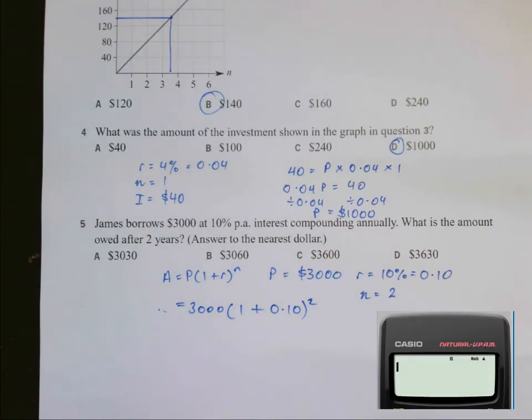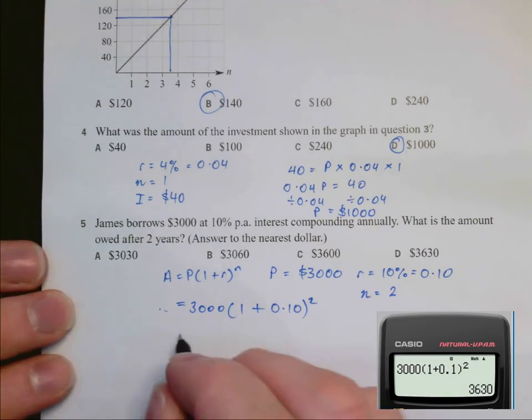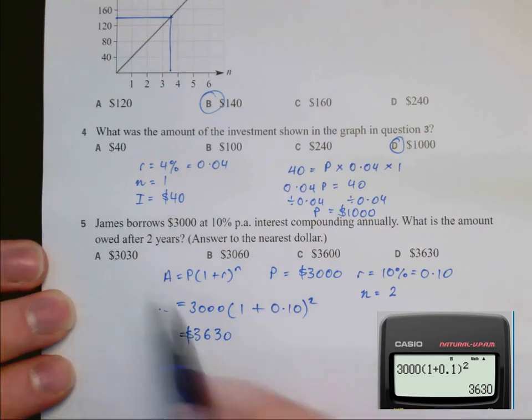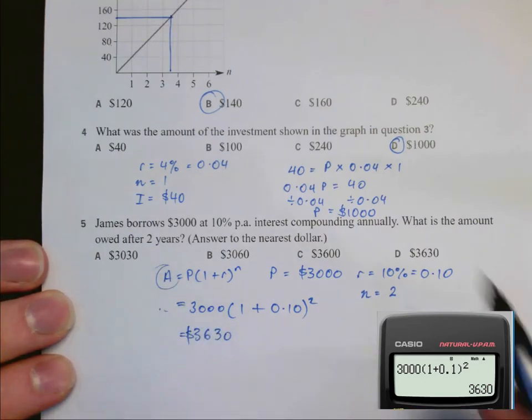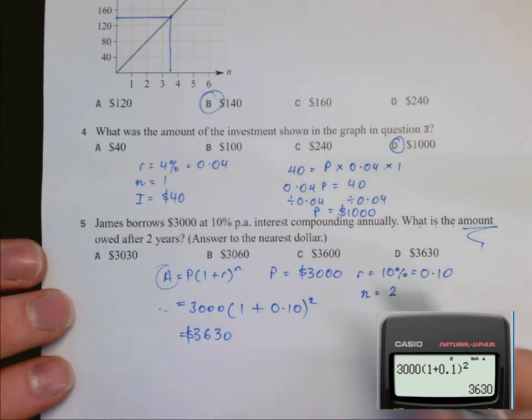So putting all those into our formula, we have 1 plus 0.1 to the power of 2. On our calculator, we do $3,000 open bracket 1 plus 0.1 to the power of 2, and we get $3,630. For compound interest this is the amount. We should check the question. What is the amount? So we have answered it correctly.